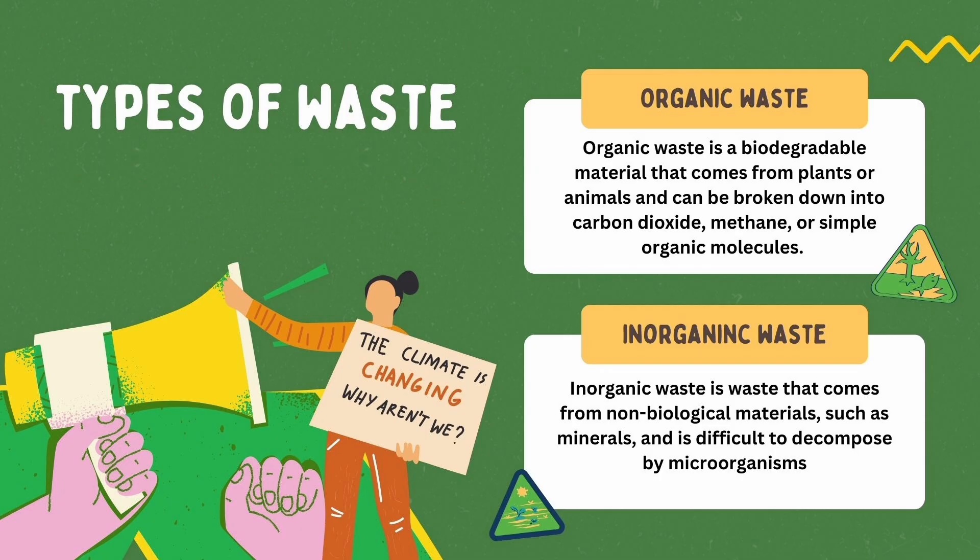Now let us see what are the types of waste. Waste has been classified into organic waste and inorganic waste. Organic waste is a biodegradable material that comes from plants or animals and can be broken down easily into carbon dioxide, methane or simple organic molecules. Whereas inorganic waste, on the contrary, is material that comes from non-biological material such as minerals and is really difficult to decompose by microorganisms, thus creating a huge problem.